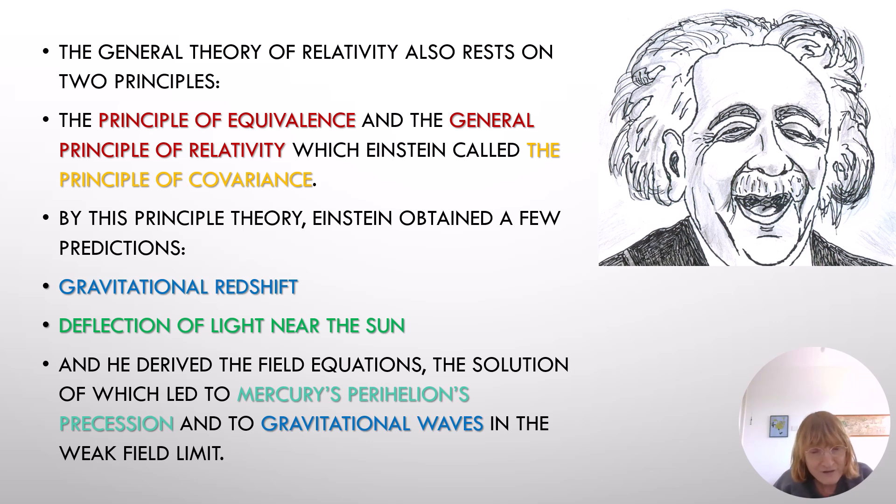The general theory of relativity also rests on two principles: the principle of equivalence and the general principle of relativity, which Einstein called the principle of covariance. By this principle theory, Einstein obtained a few predictions: gravitational redshift, deflection of light near the sun. He derived the field equations, the solution of which led to Mercury's perihelion precession and to gravitational waves in the weak field limit.